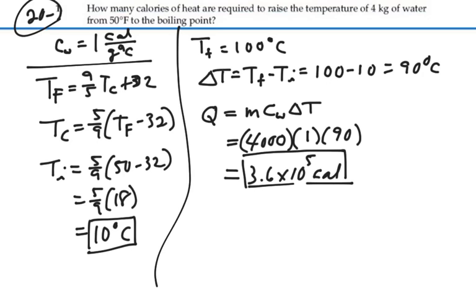So it will take 3.6 times 10 to the 5 calories of heat to raise the temperature of 4 kilograms of water from 50 degrees Fahrenheit to the boiling point.